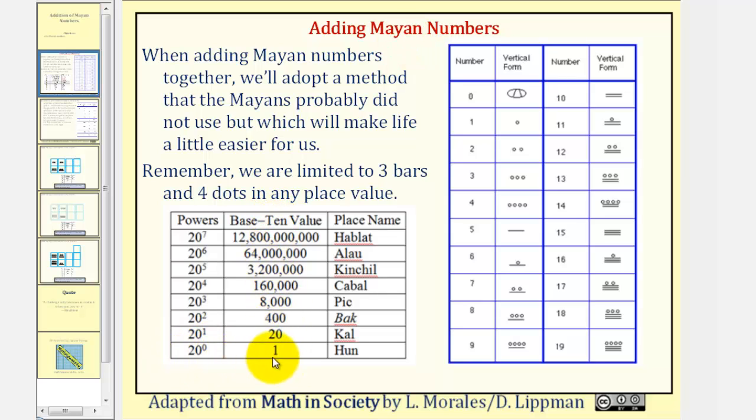So we have 20 to the zero or the ones place value, 20 to the first or the 20s place value, 20 to the second or the 400s place value and so on.